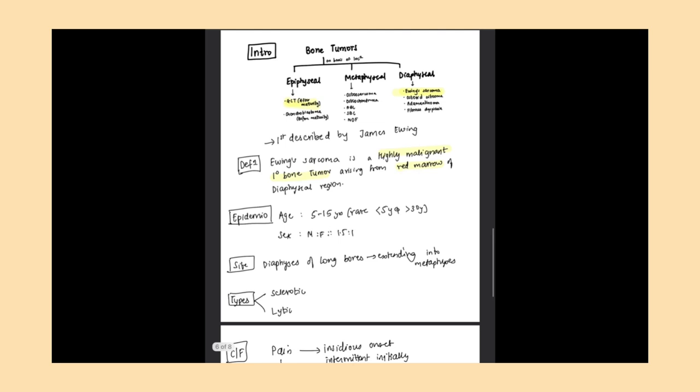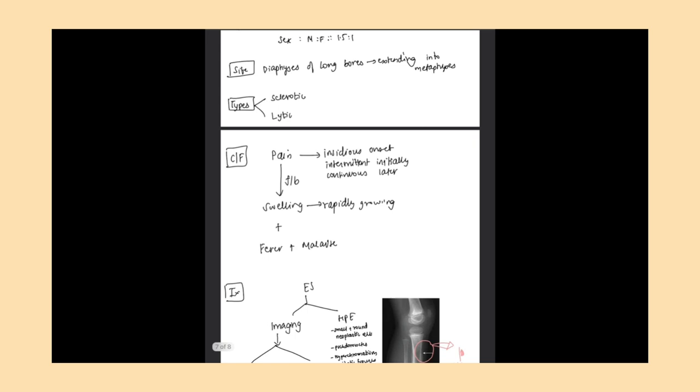There are two types of Ewing sarcoma: pyrotic and lytic. Coming to clinical features, the prime clinical feature is pain, which is insidious in onset, intermittent initially but continuous later on.